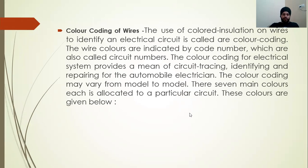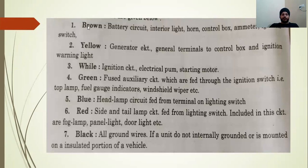Next topic is color coding of wires. In a vehicle, different colored wires are used for specific tasks. This is a standard used across all companies and all types of vehicles. This standardization makes fault tracing easier for mechanics and auto electricians — for example, to trace and replace a faulty headlight, they follow the wire color coding.